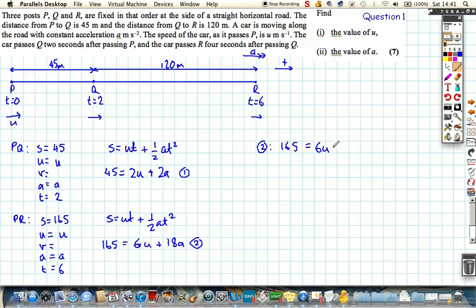So we get two is 165 equals 6u plus 18a. And if we triple, if we do three times one, we get this: we get 135 is equal to 6u plus 6a. Now if we just do subtraction, do the top one take away the bottom one, we get 30 is equal to 12a.